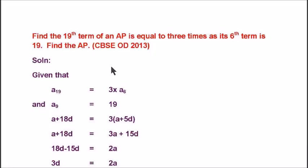Dear students, in this question, a condition is given, that is, the 19th term of an AP is equal to three times of its 9th term and also given that the value of 9th term, that is, 19. So, we want to find the AP. So, considering an AP, we must know the first term A and the common difference D. So, the first step is to find out A and D.